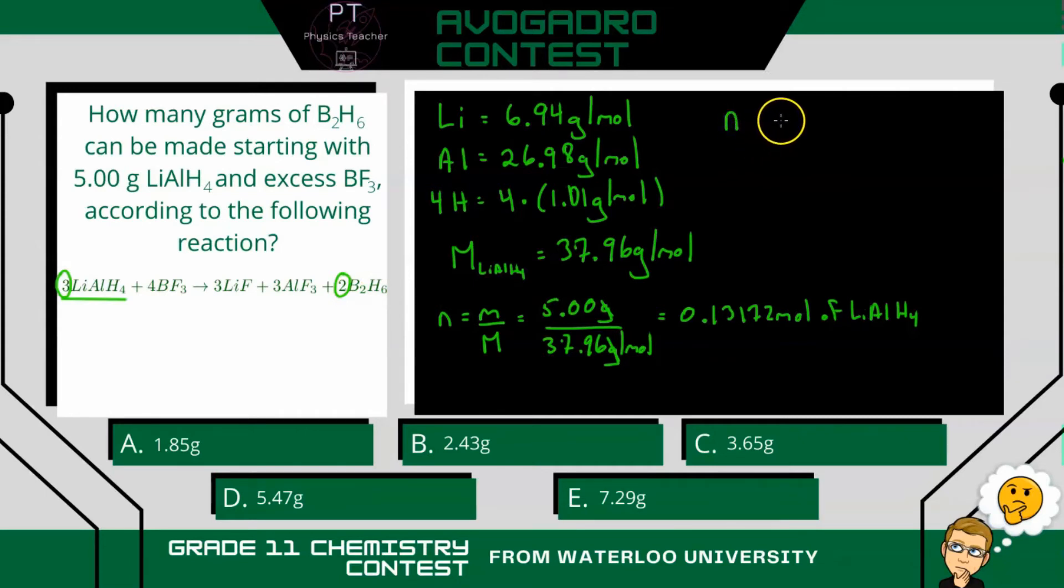So N for diborane will be 0.13172 moles of lithium aluminum hydride. And we're going to multiply that by 2 moles of diborane over 3 moles of lithium aluminum hydride. So our units here are going to cancel and we're going to end up with moles of diborane, which we end up getting 0.08781 moles of B2H6.